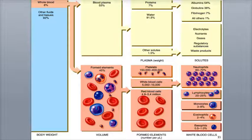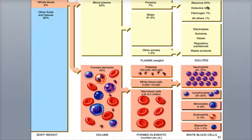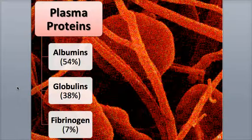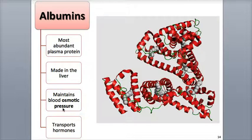Blood plasma is a straw-colored liquid that consists of about 91.5% water and 8.5% solutes. Of the solutes, most — 7% — are proteins. There is a special group of proteins only found in the blood plasma called the plasma proteins, made by the liver. The albumins make up 54% of the plasma proteins and are the smallest, most abundant proteins. They play a role in hormone transport and osmoregulation by helping to regulate osmotic pressure, which affects the filtration and secretion of fluids in and out of the capillaries.